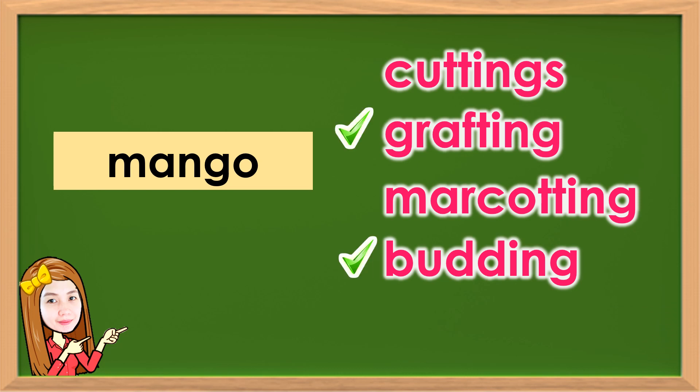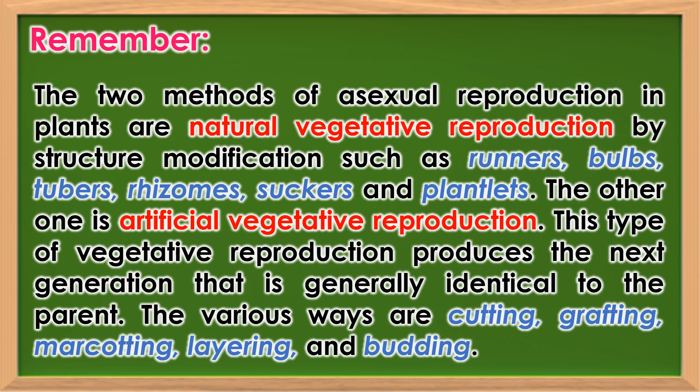Grade 5 learners, remember that the two methods of asexual reproduction in plants are: natural vegetative reproduction by structure modification — such as runners, bulbs, tubers, rhizomes, suckers, and plantlets — and artificial vegetative reproduction, which produces the next generation generally identical to the parent. The various ways are cuttings, grafting, marcotting, layering, and budding.